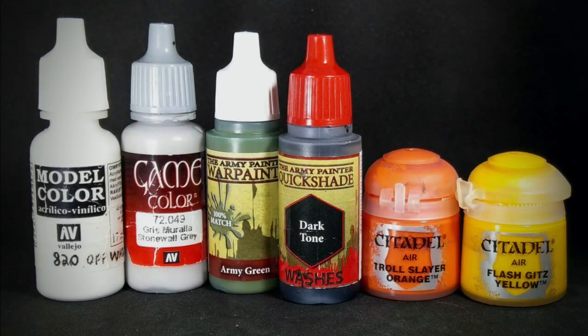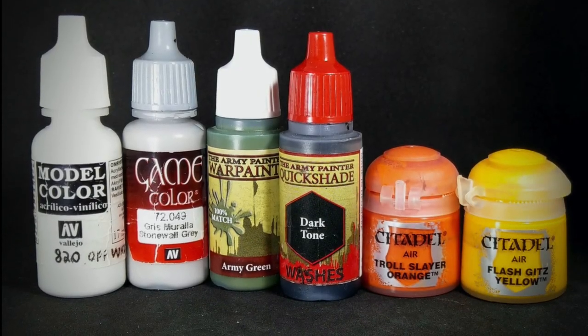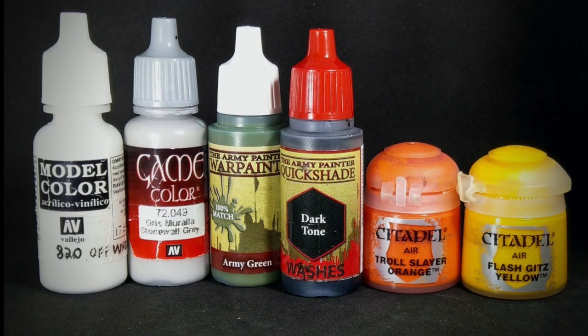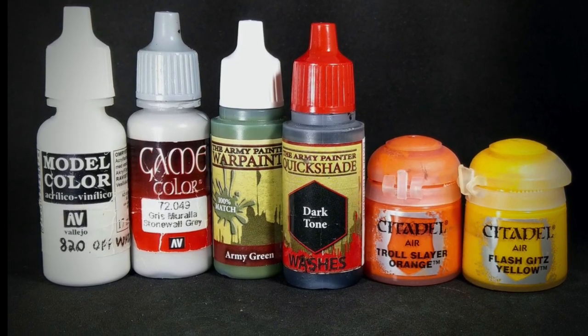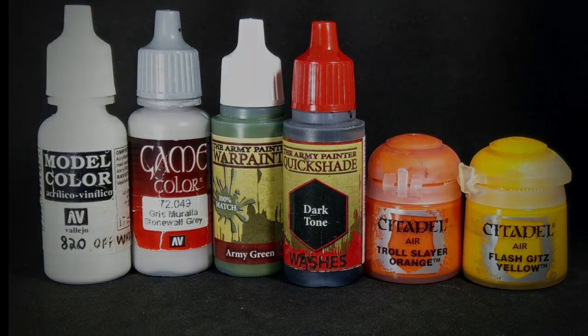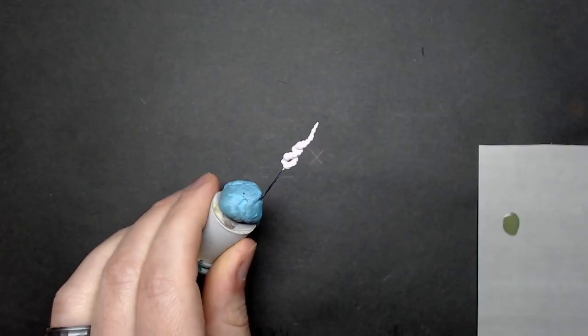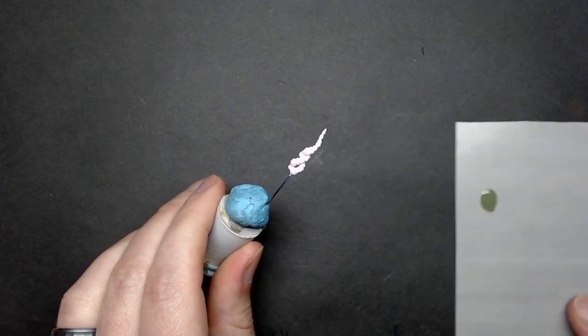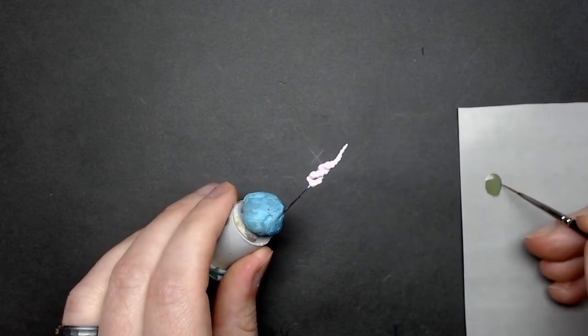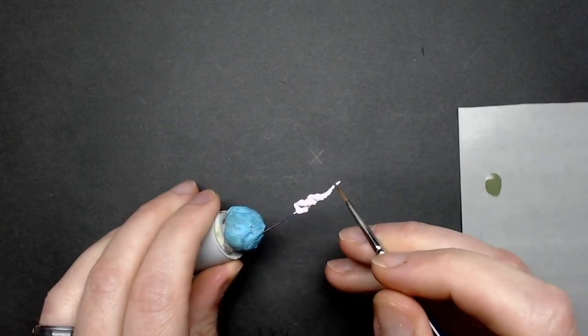For the paints I'm going to use an off-white, a light gray, an army green, a black wash in this case dark tone, orange and yellow. You can also use red and I'll show you an example of that at the end of the video on how I did that. I also primed in light gray. You can use white, whatever you have available.